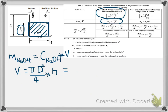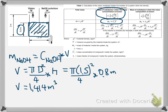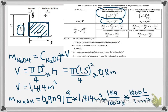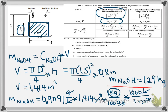The mass of sodium hydroxide will be its concentration times the volume of the tank. The volume is 1.414 cubic meters. Now the mass of NaOH is the concentration times the volume, adding the conversion factors. The liters cancel with liters, cubic meters cancel with cubic meters, grams cancel with grams, so we must get kilograms. The mass of sodium hydroxide inside of our tank is 1.29 kilograms.